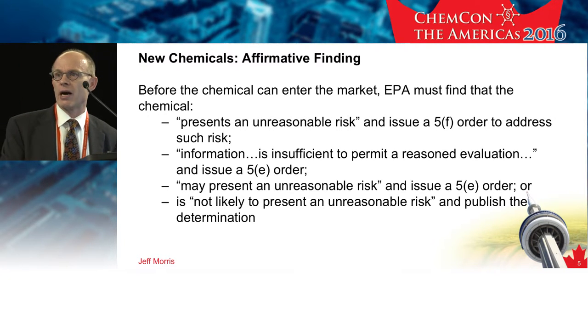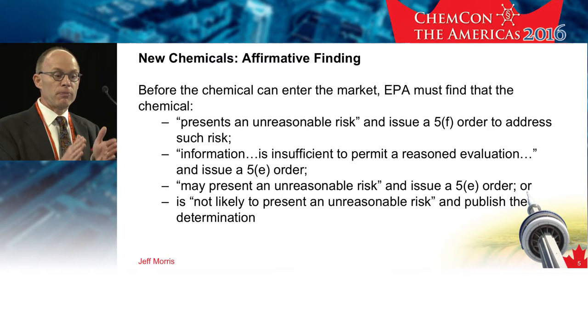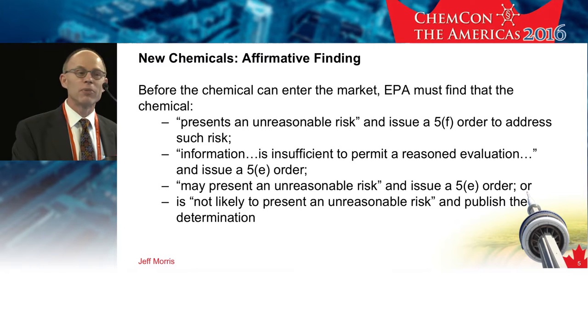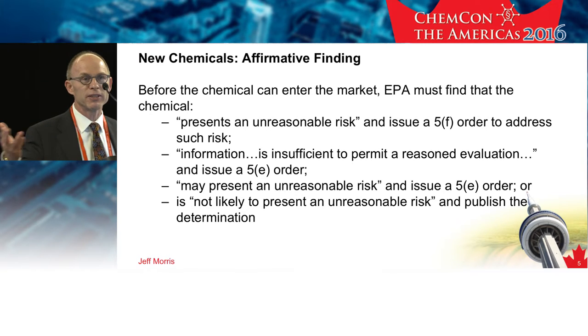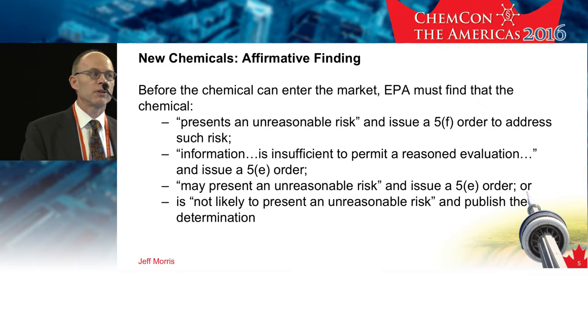The reasonably foreseen uses, as we're interpreting them now, are uses associated with a close analog to this chemical — a chemical that seems closely related and could likely be used in the same way as the PMN substance — where there are uses not on the PMN form. We would have to make our determination not only on the uses in the PMN form, but also on those reasonably foreseen uses. Finally, there's the finding of 'not likely to present unreasonable risk.' That doesn't say safe, but with that language in the law, it basically means the company is good to go to manufacture per the PMN form with no restrictions. Making that affirmative finding is a big change.